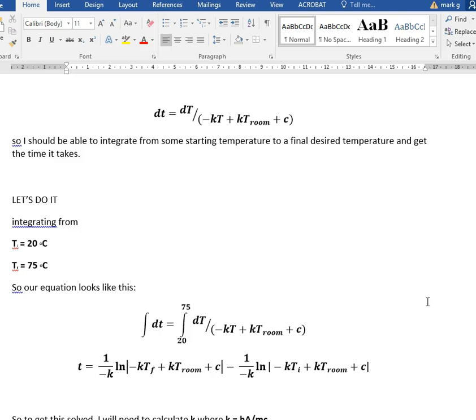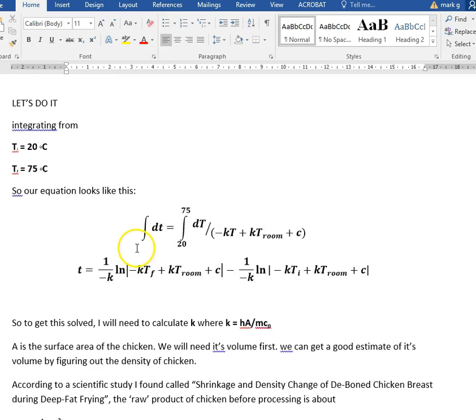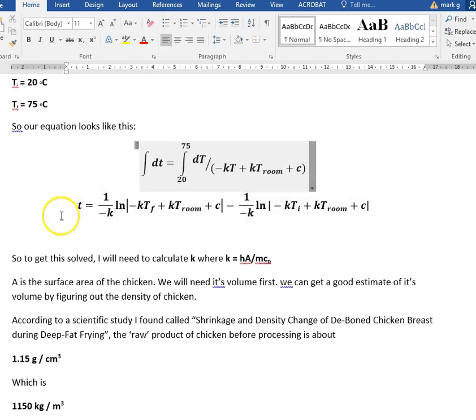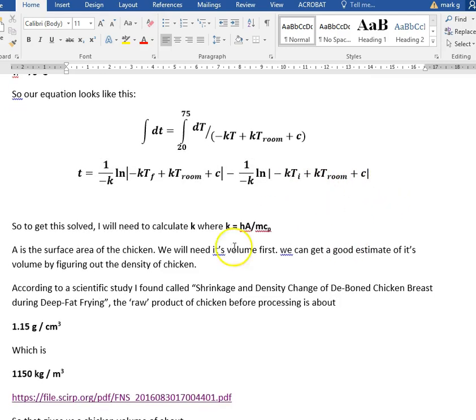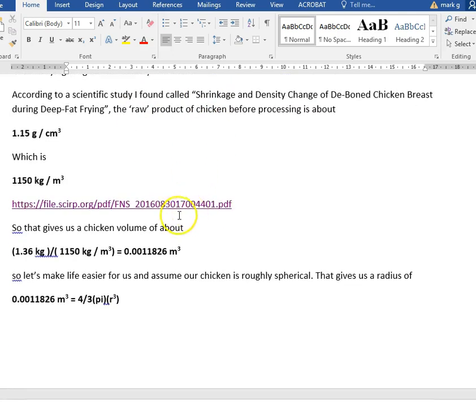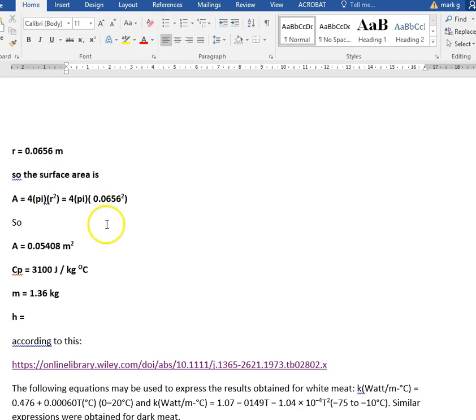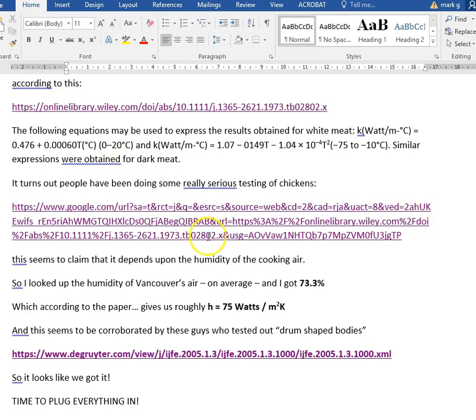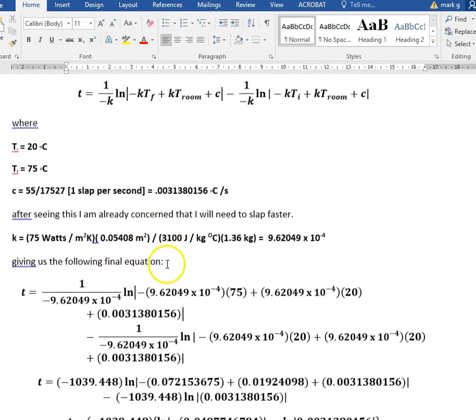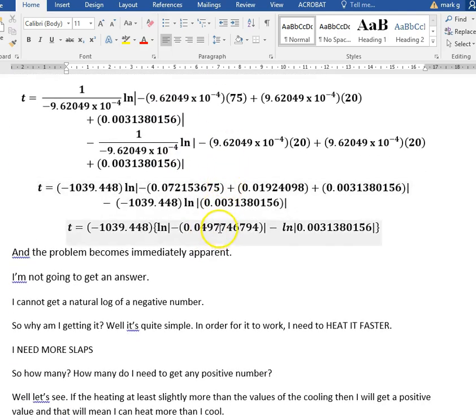We're moving into calculus. It's the only way to talk about it, because really the rate of heating is usually dependent upon a fixed temperature, but in this case since I am continually changing the temperature, the rate of cooling changes as well. I got to first start off with this equation, which is a variation of what I had already shown you, and then I have to integrate. I have to integrate the equation. Here it is from 20 to 75 degrees, and I end up getting this equation. t equals 1 over negative k, natural log of negative kt final plus kt room plus c minus 1 over negative k natural log of negative kt initial plus kt room plus c. This is me working out the surface area of the chicken, working out the h value. I plugged everything in.